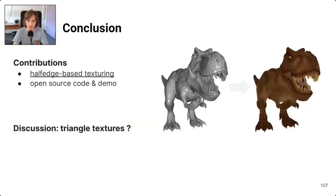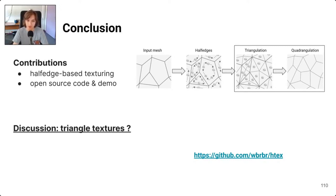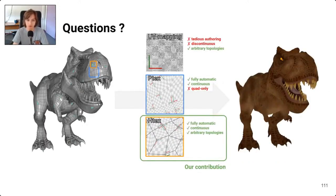To conclude, we presented our novel texturing algorithm based on the half-edge data structure that works natively with meshes of arbitrary topologies. The code is available at the link shown. As an open-ended question: our filtering algorithm only uses properties of the triangulation; the quadrangulation is needed only because hardware texture units work with square textures. If we had a triangular texture unit, we could store one texture per triangle, simplifying the algorithm and removing memory waste at boundaries. We'd be interested in hearing about original use cases for a triangular texture unit.